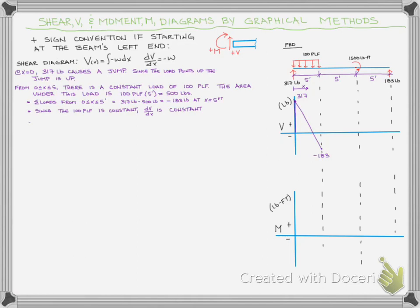The final thing we want to look at in this zero to five feet range is the fact that we now have a shear of zero — we crossed zero along the way. And we know when the shear is zero, that means we have a maximum on our moment diagram. So let's go ahead and figure out what that x value is.